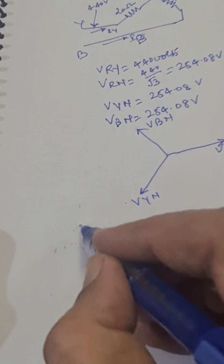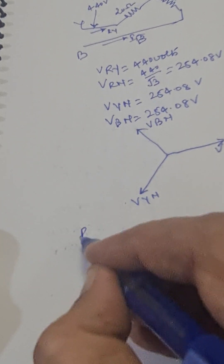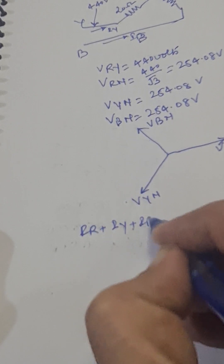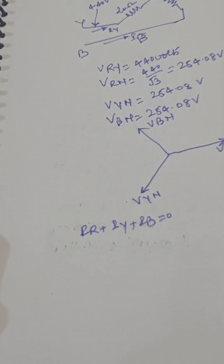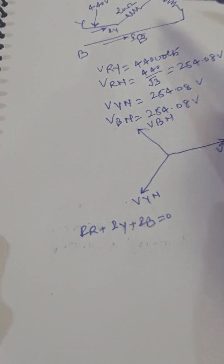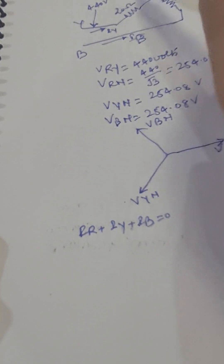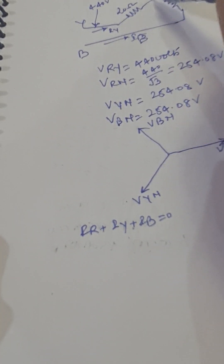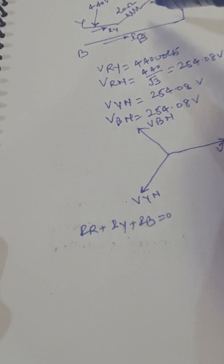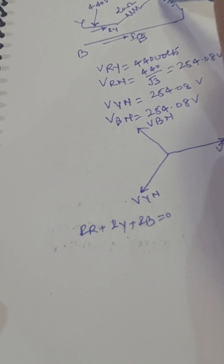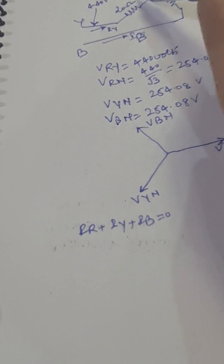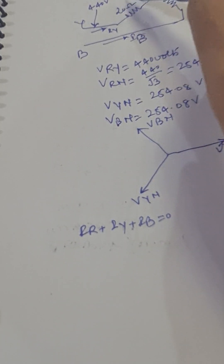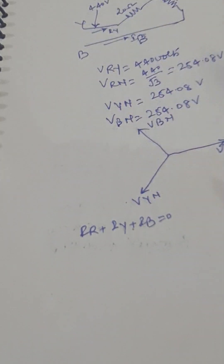We apply KCL: IR + IY + IB equals zero. This is because IR, IY, and IB flow outward, and the sum of these three currents is zero since there is no neutral wire available for feeding current back to the source.